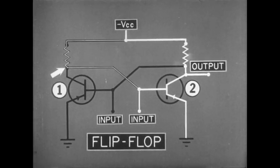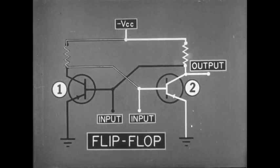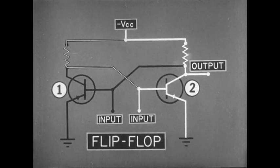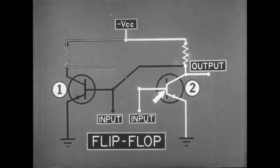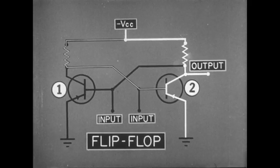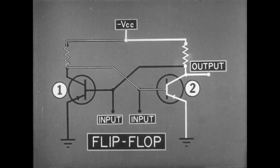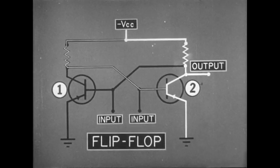Its collector again has reverse bias, which serves as continuing forward bias for transistor two. Transistor two continues to deliver an output even though the input signal is no longer present.